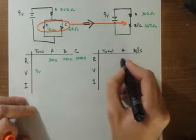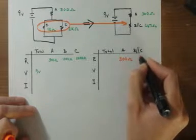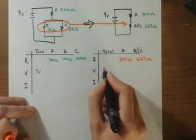So now I'll fill in a second chart where I know the resistance A is 300 ohms, and B in parallel with C is 667 ohms. I still have my 9 volt battery.